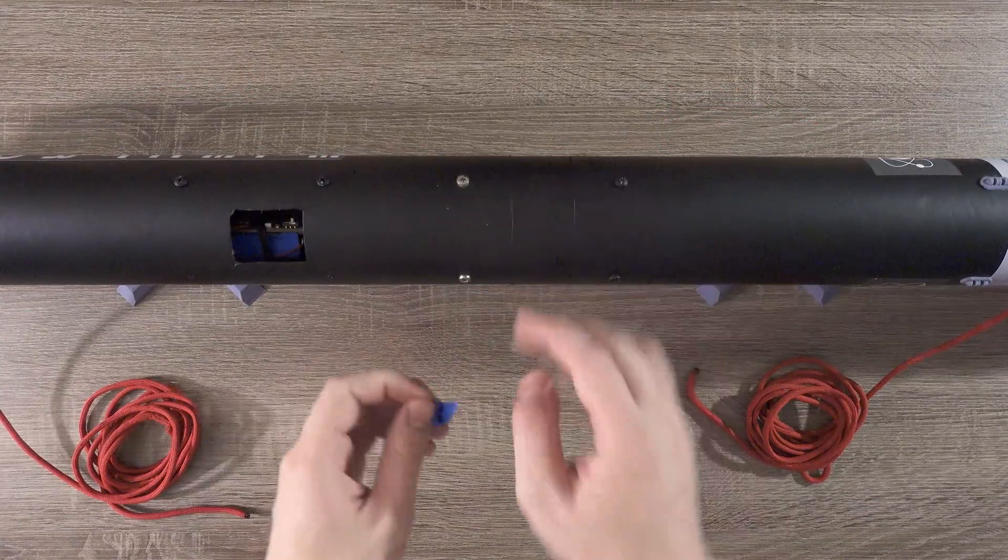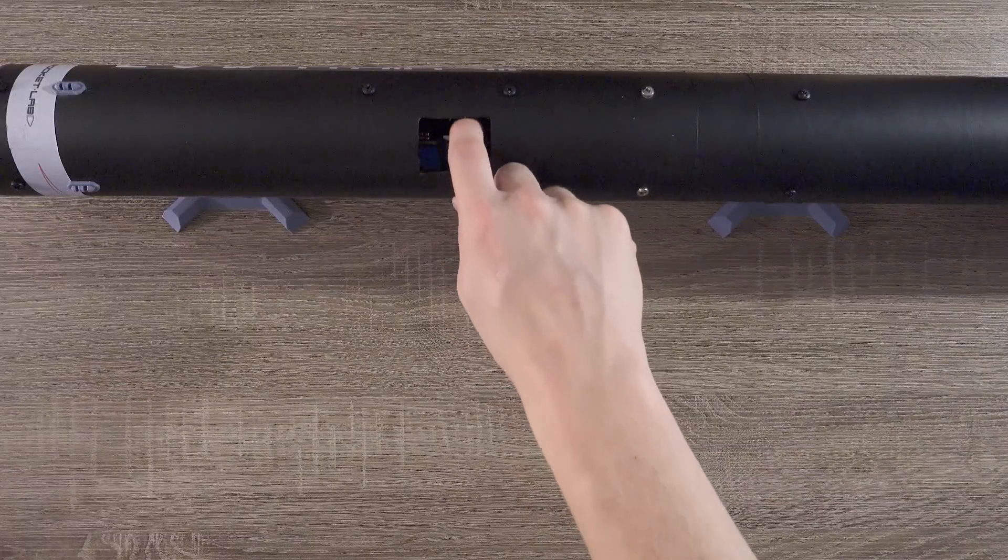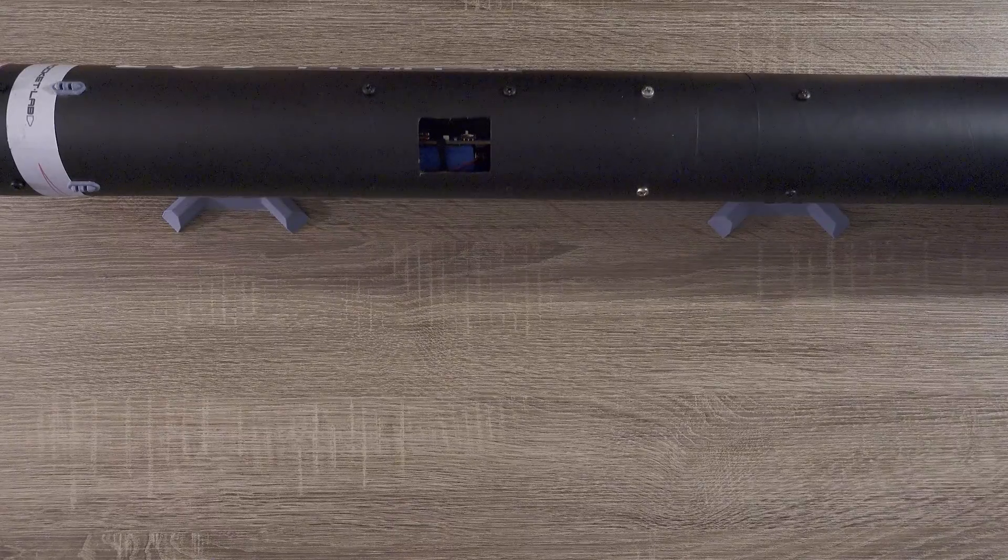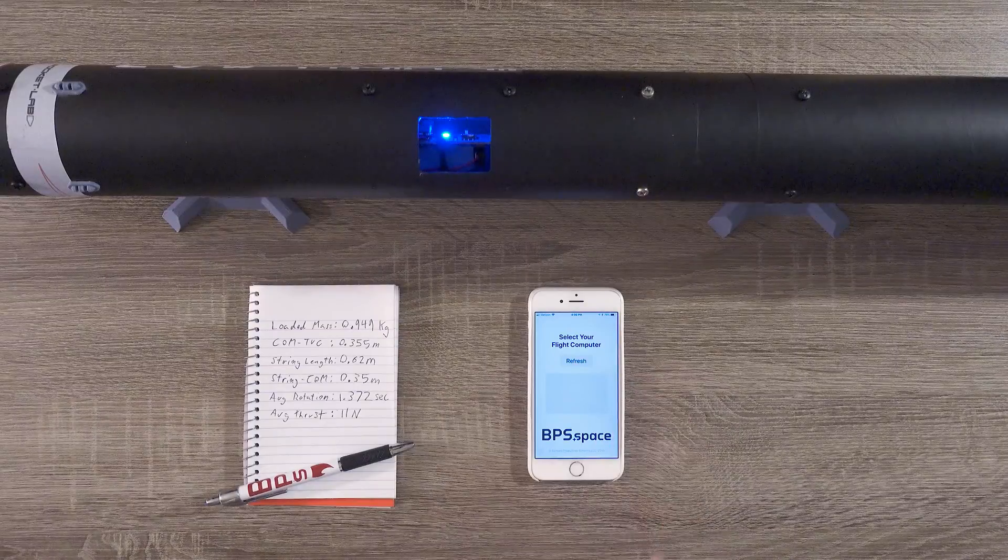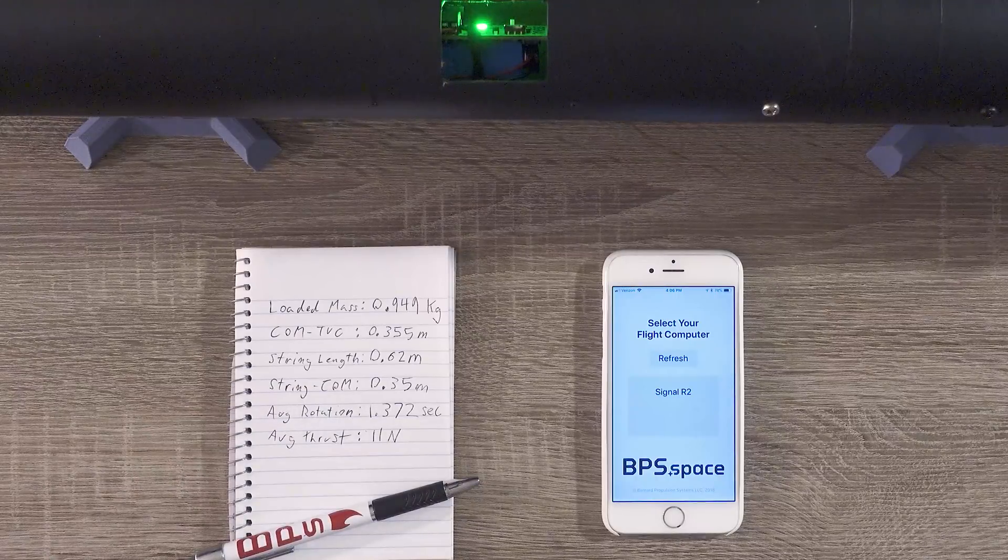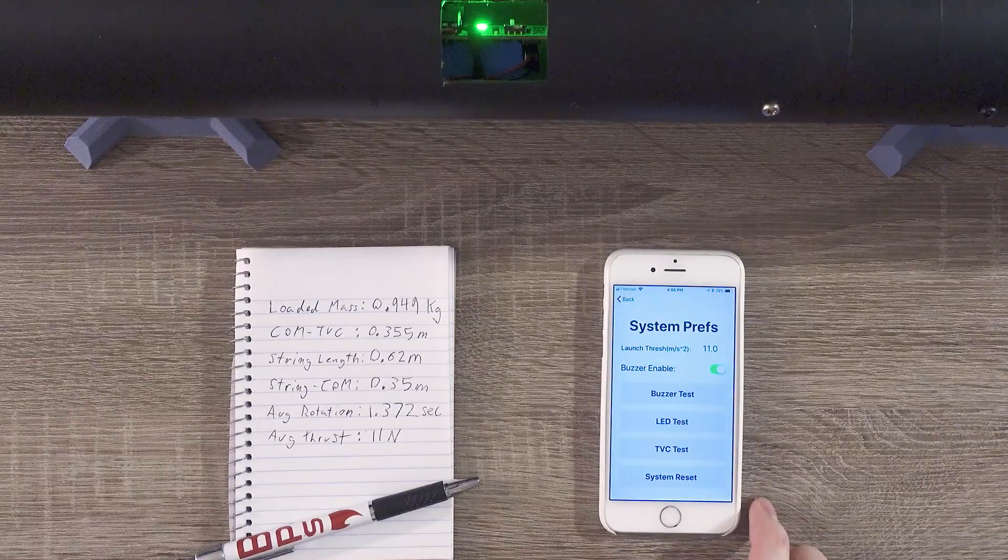With the swing testing complete, we can remove the strings and tape from the vehicle. Then we'll boot up the flight computer again. We'll also get out the notebook as well as the SignalR2 app. Tap on SignalR2 again, and then go into System Preferences first and turn off that buzzer.